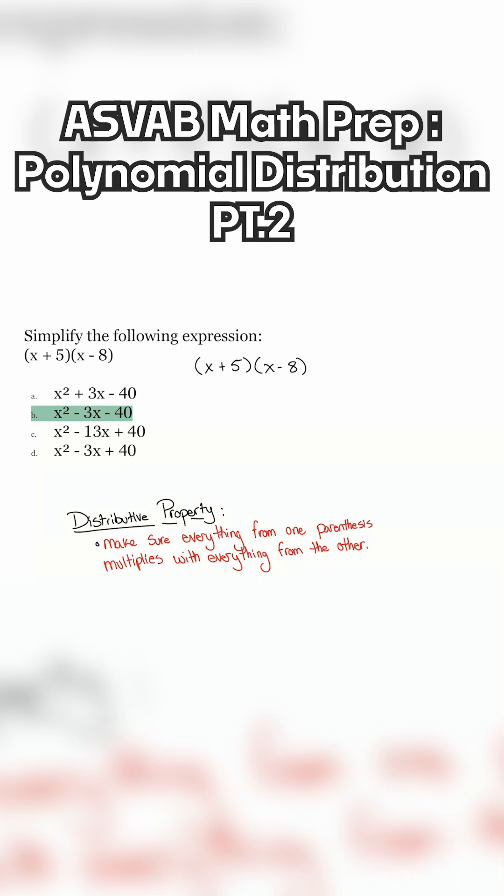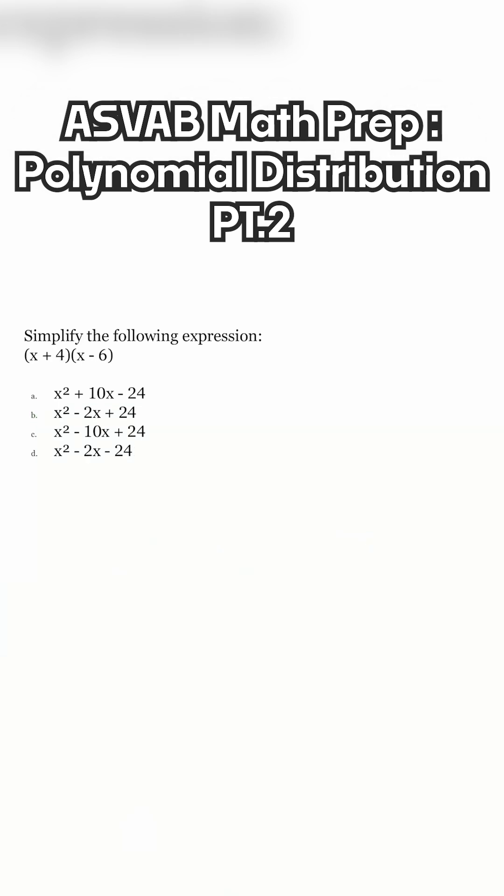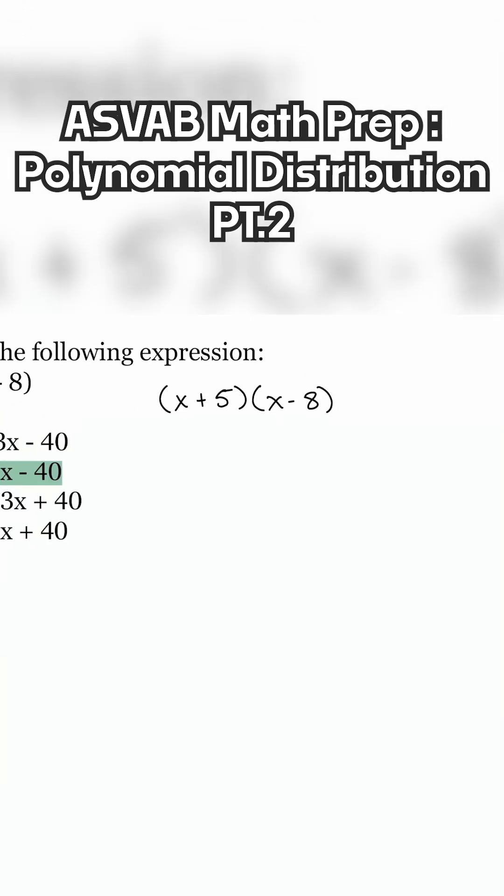Let me show you how that looks. Let's zoom on in and let me show you. So I'm going to begin with this x over here. I'm going to make sure that this x multiplies with this x, x times x. And I'm also going to make sure that that same x multiplies with the negative eight. So that'll be minus eight times x.